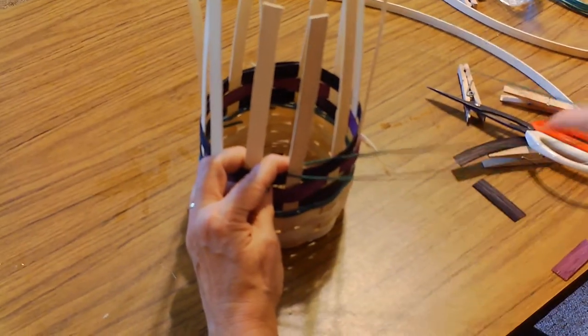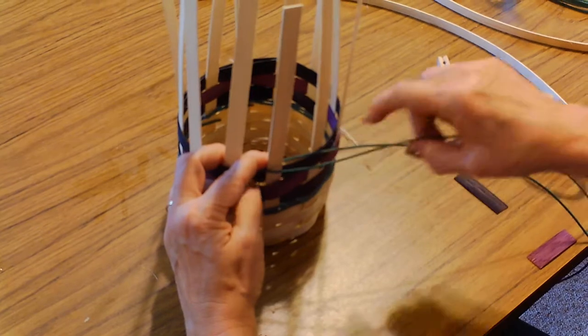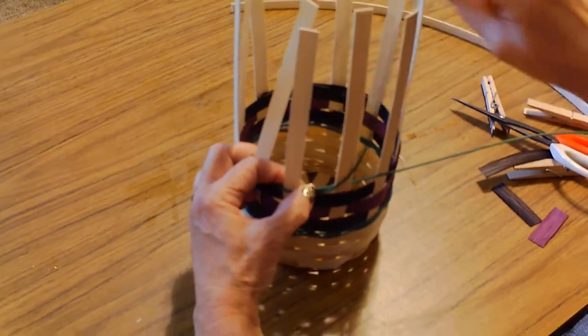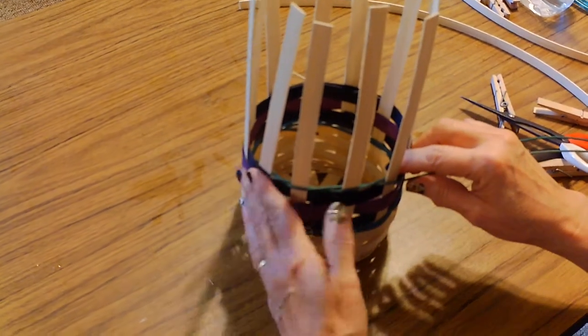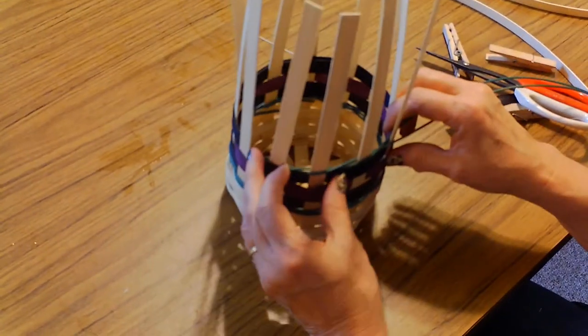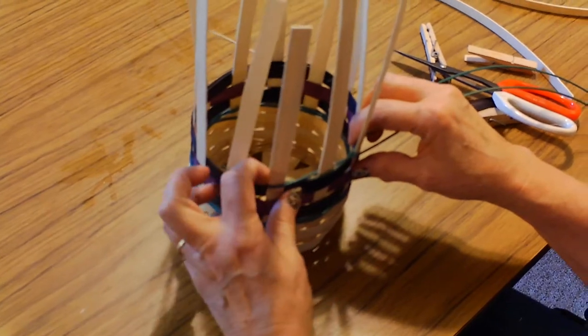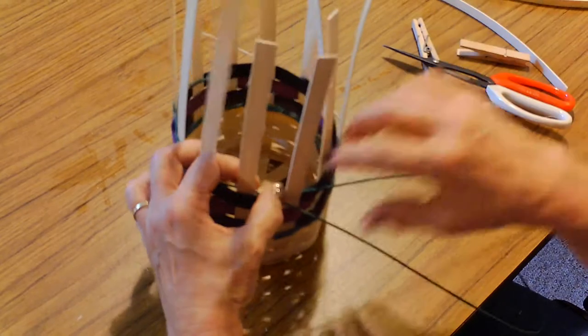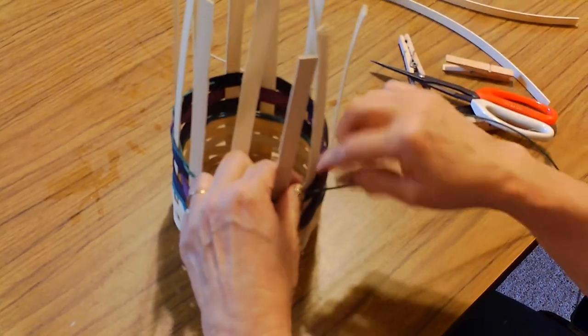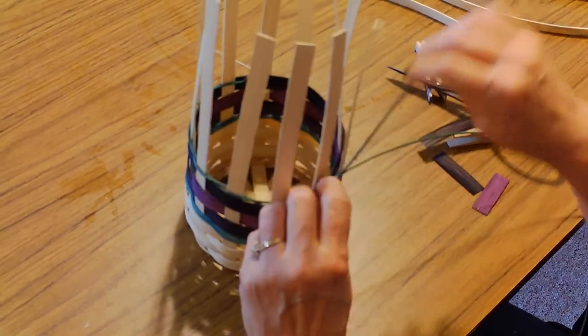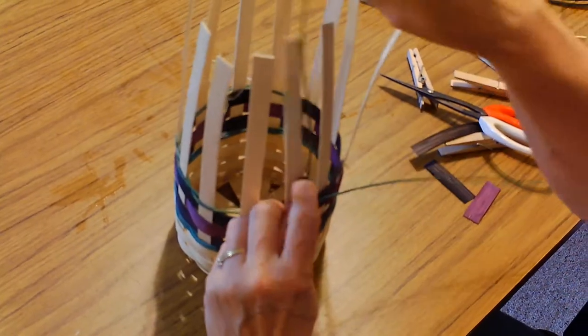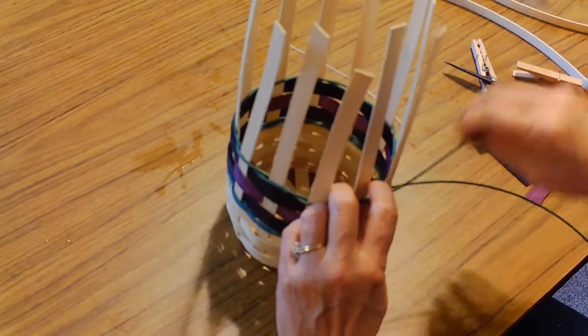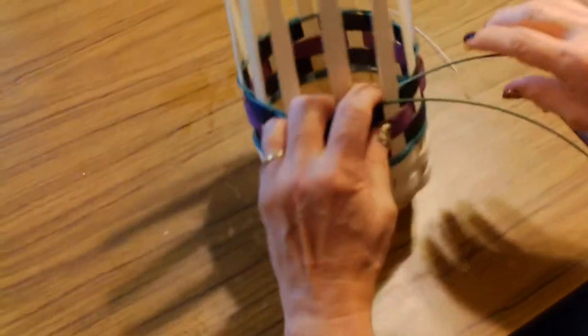The one on the outside is going to go to the inside and out. This one's outside, it goes inside and out. Now that's secure. The one on the outside goes to the inside. If you have to talk to yourself to keep on track by saying over under, over under, then talk to yourself. There's no harm in that, just don't answer yourself.